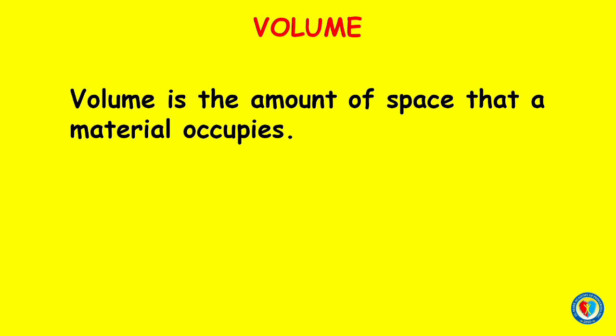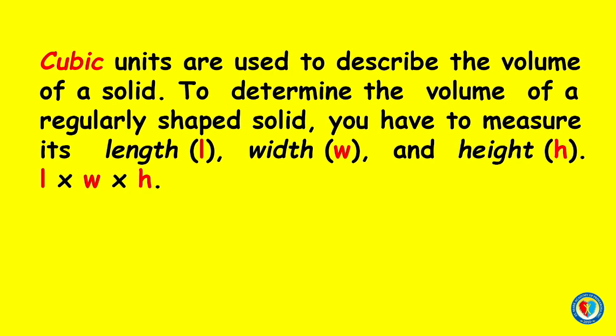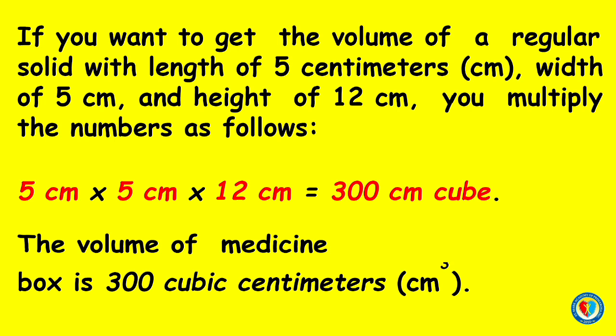Volume is the amount of space that a material occupies. Cubic units are used to describe the volume of a solid. To determine the volume of a regularly shaped solid, you have to measure its length, width, and height with a ruler: length times width times height. For example, a regular solid with a length of 5 centimeters, width of 5 centimeters, and height of 12 centimeters — 5 cm × 5 cm × 12 cm equals 300 cubic centimeters. Thus, the volume of the medicine box is 300 cubic centimeters.